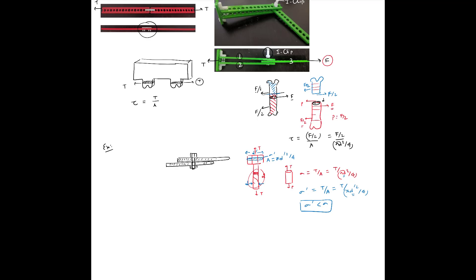For shear stresses to act on the bolt, the loading condition must change. Instead of a tensile axial force, we pull the two plates in opposite directions with some force F. This force has a tendency to slice the bolt at the cross section between the plates. Drawing the free body diagram of the bolt: plate one pulls it one way with force F, and plate two pulls it the opposite way with force F — so the force F is in the plane of that cross section.